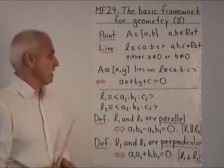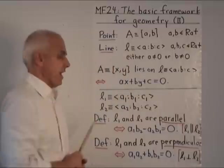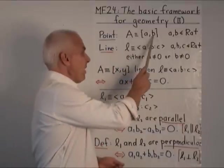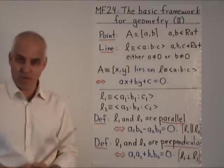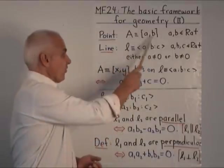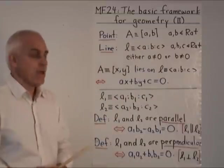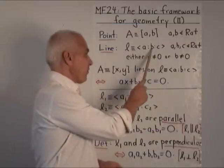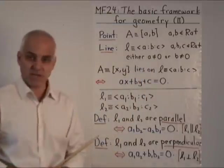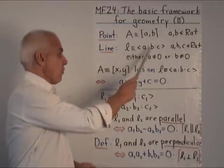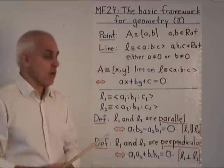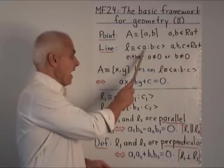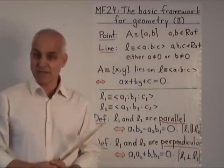The main ideas were that of a point and a line. We defined a point, such as A, to be an ordered pair of rational numbers a, b enclosed in square brackets. And we defined a line to be a proportion of three rational numbers A to B to C enclosed in pointed brackets, with the proviso that A and B cannot both be zero.